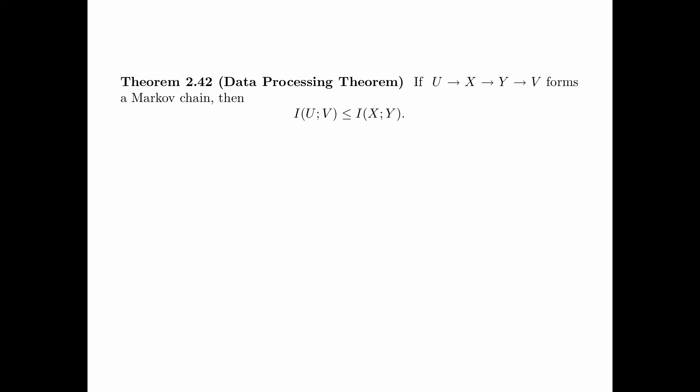The next theorem is a very important result called the data processing theorem. It says that if U, X, Y, and V forms a Markov chain, then I(U; V) is less than or equal to I(X; Y). We now prove Theorem 2.42. Assume the Markov chain U, X, Y, V.